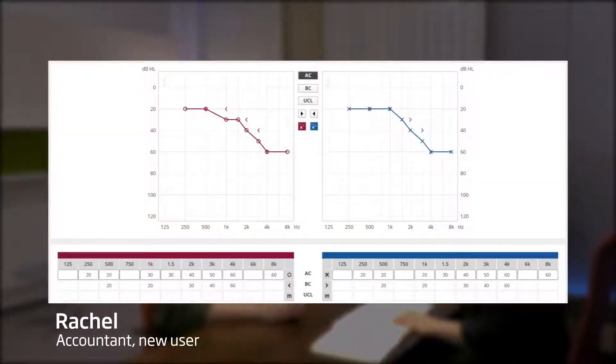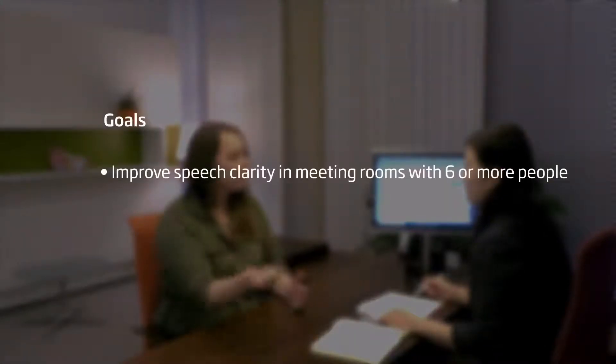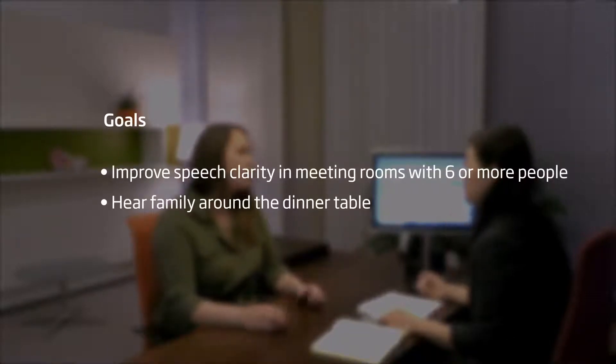This is Rachel. She has never been fitted with hearing aids previously. She has a mild to moderate sensory neural hearing loss. She leads an active lifestyle and is looking for hearing aids that can help her understand speech in more challenging situations at work and in social situations. The most difficulty she has is when there are multiple people in the same room talking at once. Rachel would like to hear with improved clarity in meeting rooms with six or more people. Rachel would like to hear family around the dinner table without needing to ask them to repeat themselves.